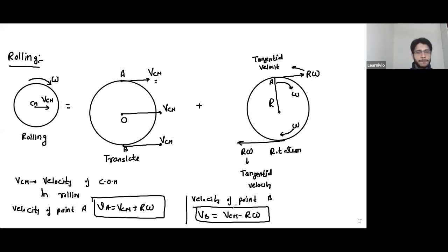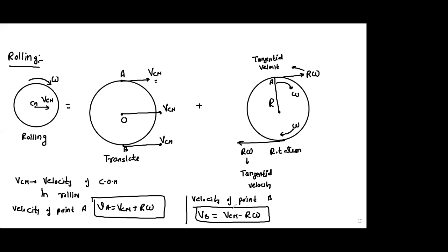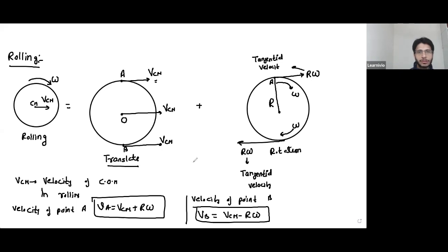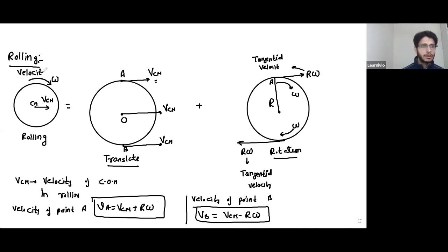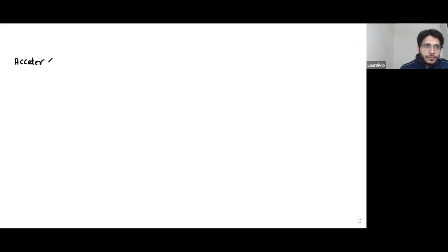Rolling is basically the combination of translation as well as rotation. So whatever you have to calculate — if you have to calculate velocity in rolling — that is the combination of translation as well as rotation. Similarly, you can calculate acceleration in rolling. Note down: velocity in rolling, and next heading will be acceleration in rolling.